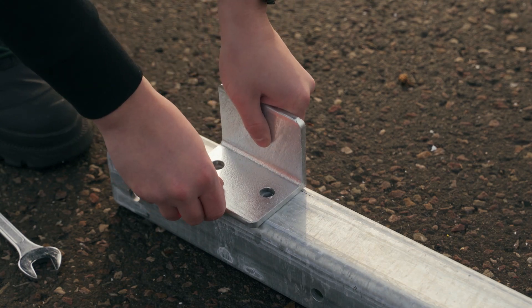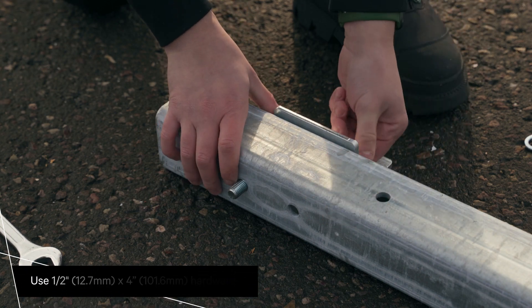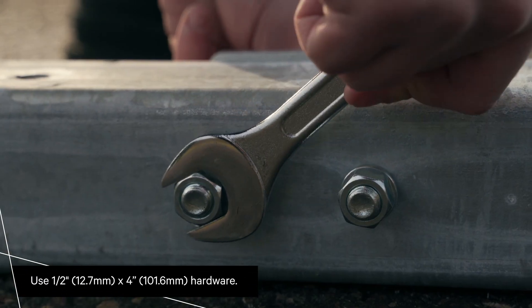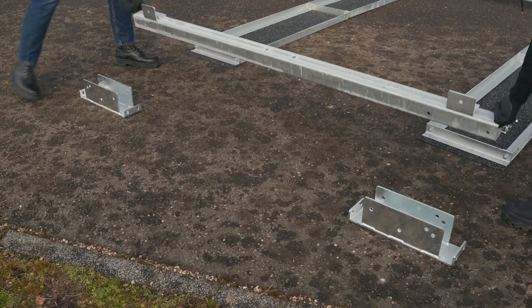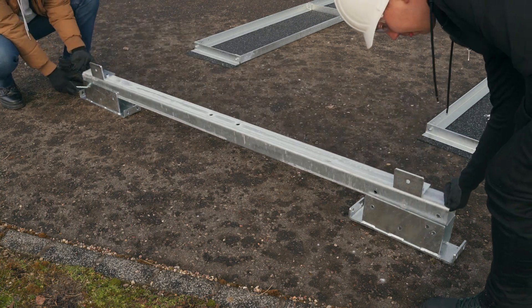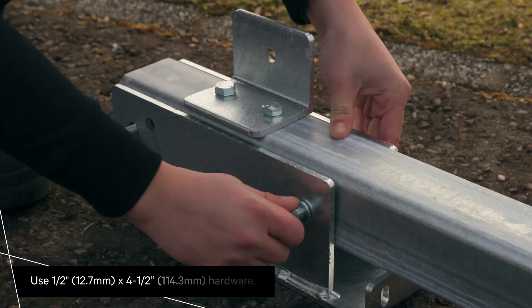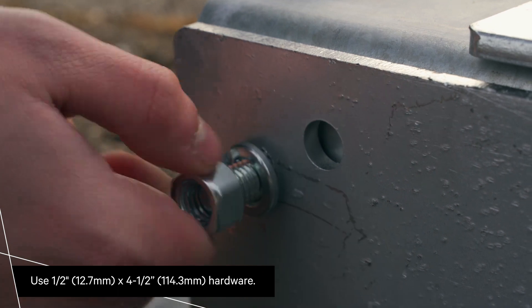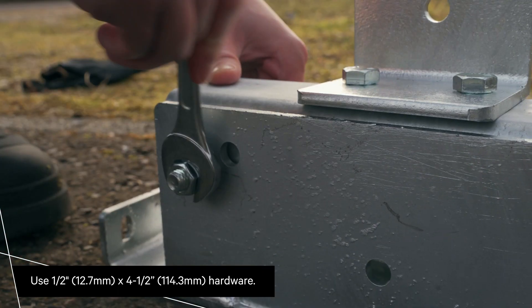Attach two brace mounting tabs to the top of the lower arm tubes. Attach two foot assemblies to one of the lower arm tubes. Repeat for the second lower arm tube.